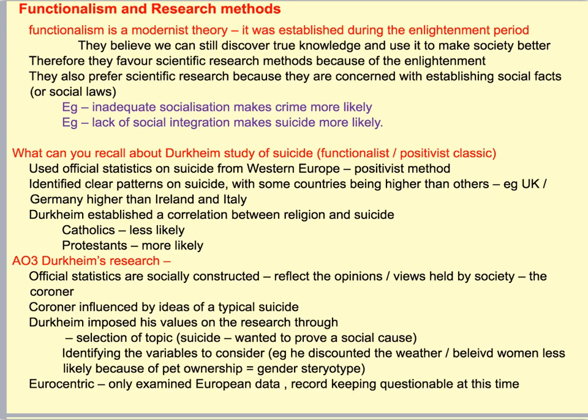One of the reasons he explained this was that Catholic communities were far more integrated with one another. Within Catholic communities, there's a lot more social pressure to go to worship — you have to go to confession. Whereas within the Protestant faith, you don't actually need to go to church to be absolved of your sins; you can pray privately. So people don't need to go to church so often. Within the Protestant faith, people had lower church attendance, so less integrated into wider society. That's a useful study to demonstrate how you can look at official statistics, find a pattern and establish a social fact.